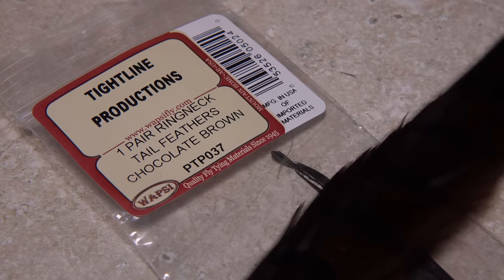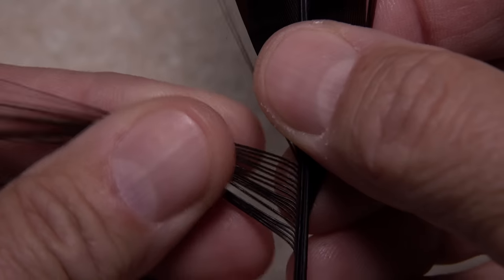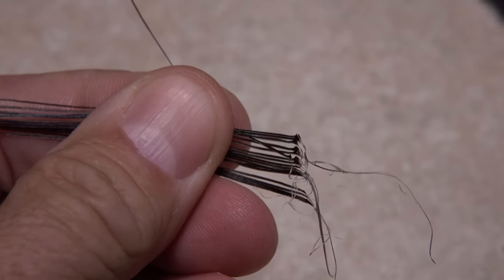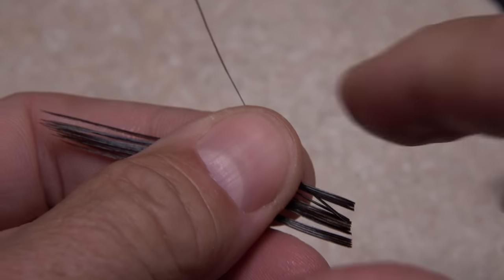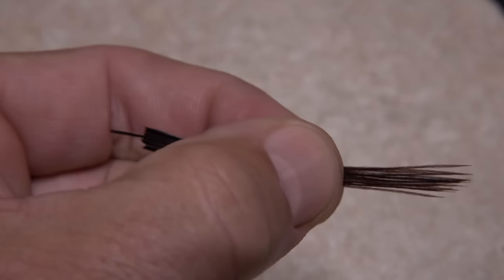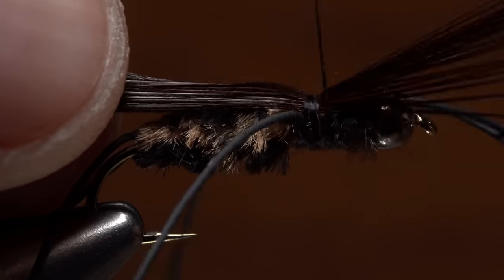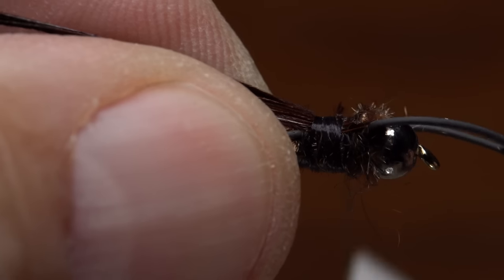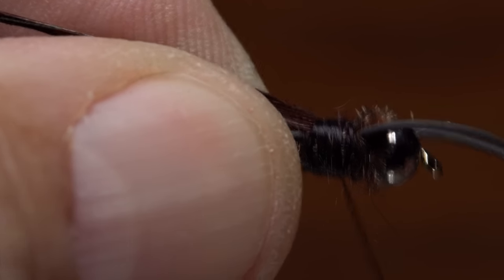Chocolate brown pheasant tail fibers are used for the wing case. Strip 16 or so free from the stem as you want a fairly substantial wide wing case. Snip the curlies off square so they won't catch on anything, then turn the fibers so the tips point to the right. While keeping them spread out, place the fibers on top of the hook shank and take thread wraps to secure them. Again, a nice wide wing case is desirable. Lift the fiber tips up, then snip them off close, trying not to cut the rubber legs in the process. Continue taking wraps of tying thread to bind the pheasant tail down really well.